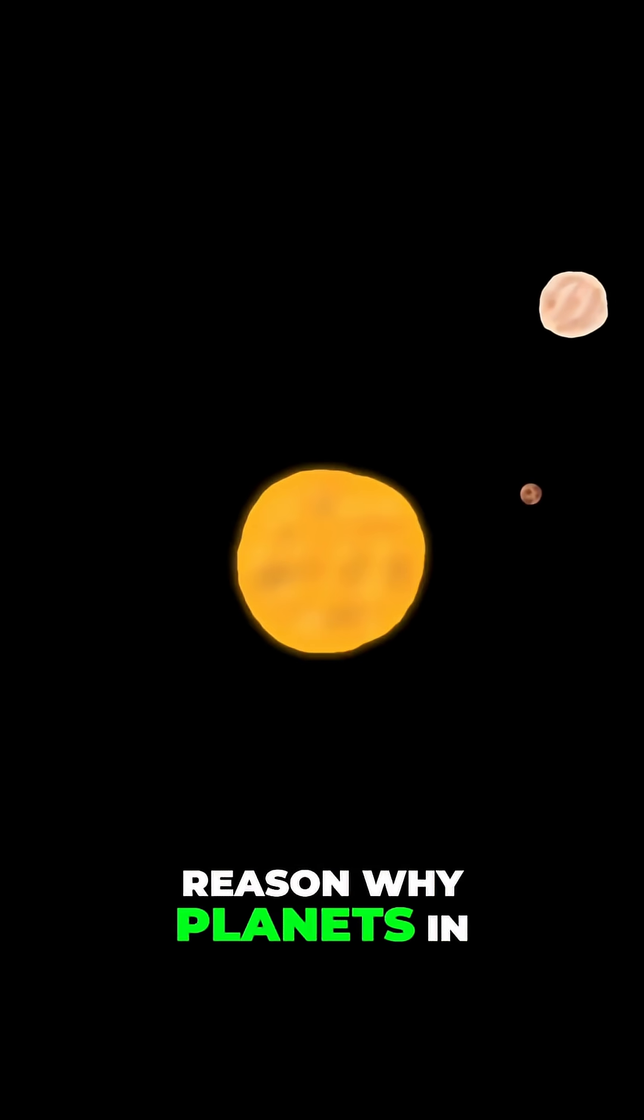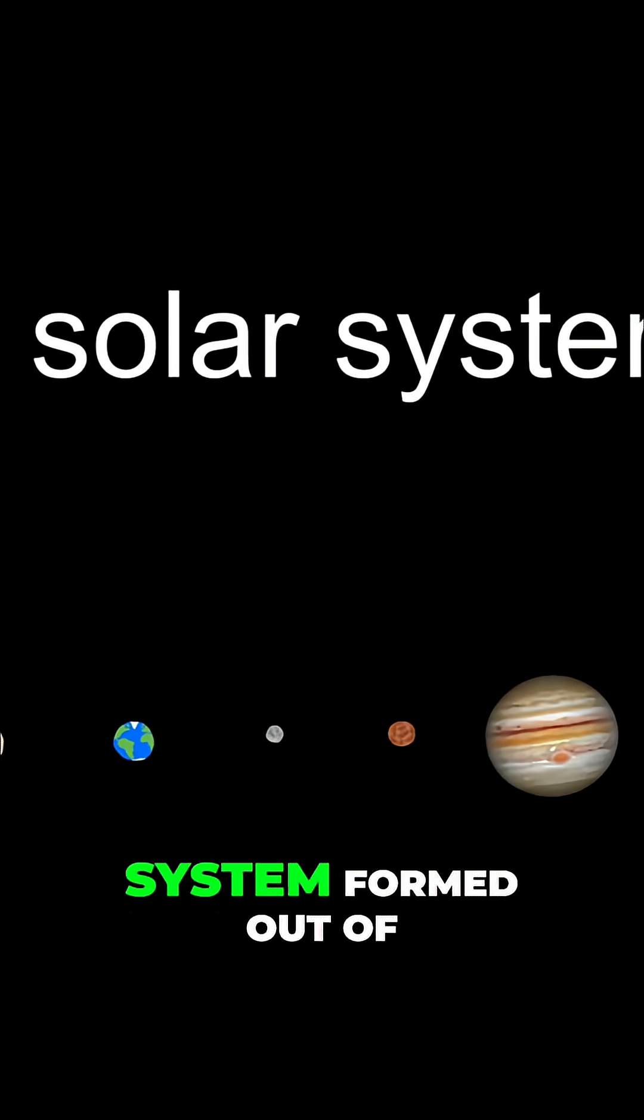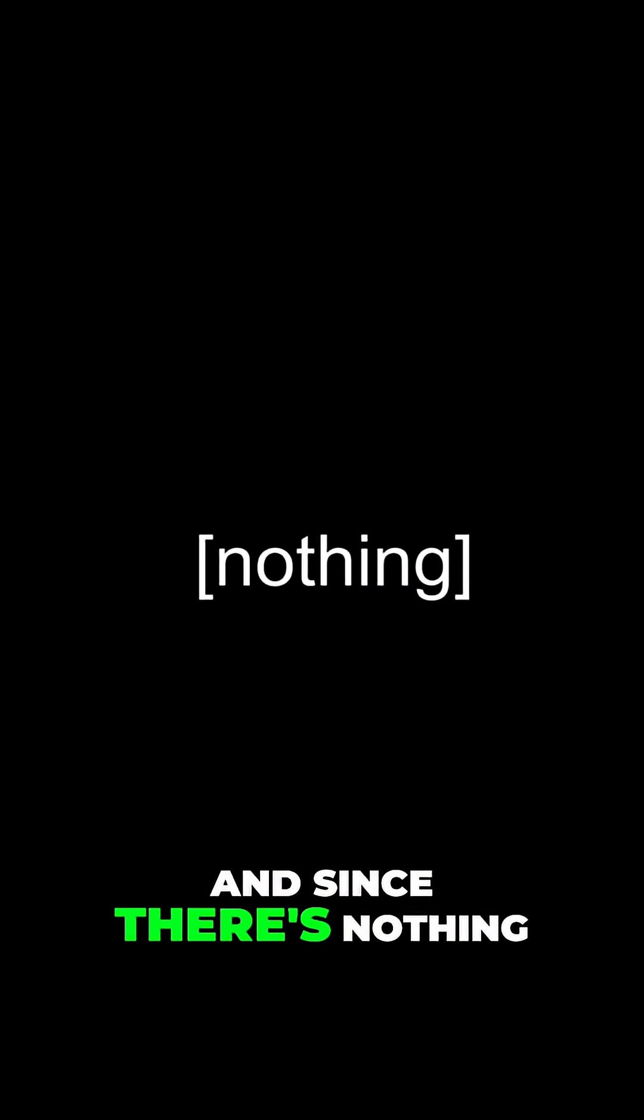Gravity is also the reason why planets in our solar system orbit the sun. They got their initial velocity when the solar system formed out of spinning gas, and since there's nothing in space to stop them from moving, they'll keep moving.